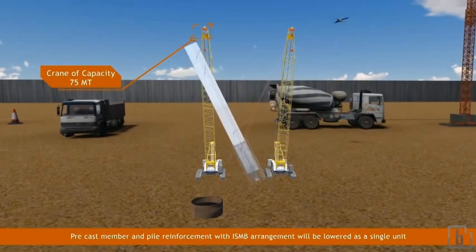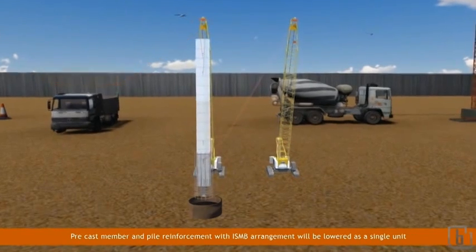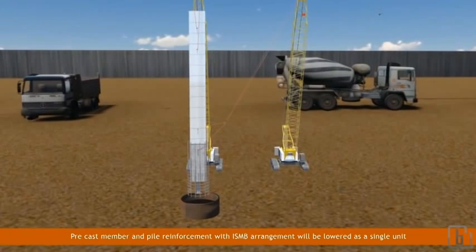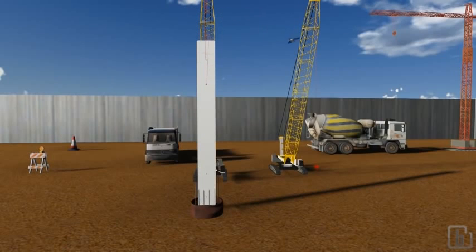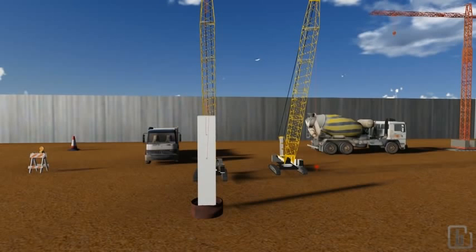The precast member and pile reinforcement with ISMB arrangement will be lowered as a single unit. During lowering of column, to maintain proper verticality and position of precast member, additional precautionary action of ISMC 150 will be provided at the column corner.